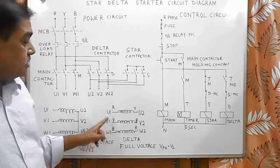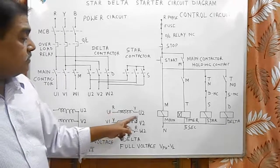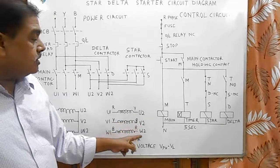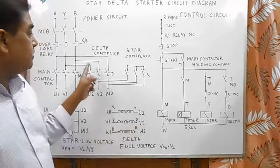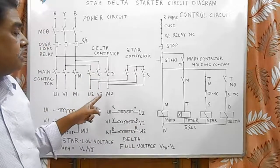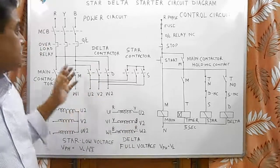U1, V1, W1 receive R, Y, B phase, whereas U2, V2, and W2 receive Y, B, and R phase with the delta contactor.